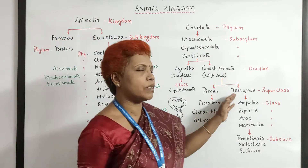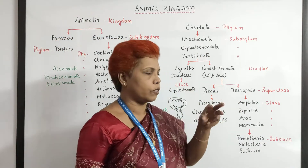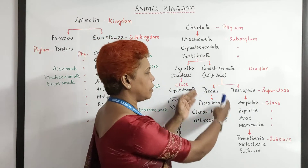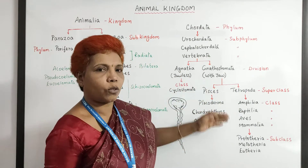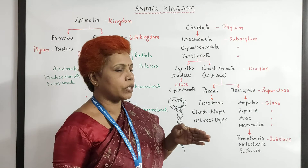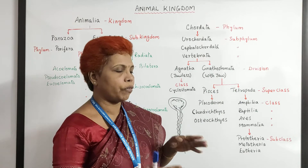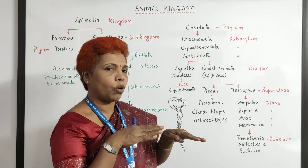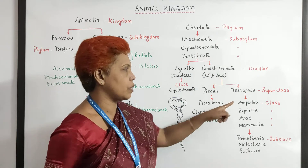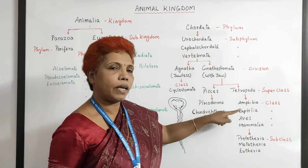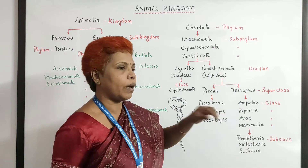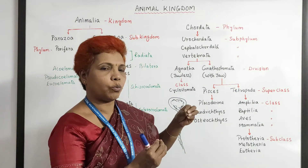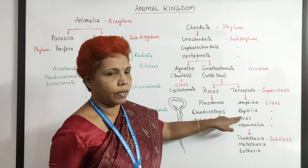When you come down to Tetrapods, four legs are present. Up to Pisces it is all aquatic; from Tetrapods it starts moving from water to land. Amphibians are wobbling between water and land. Then fully terrestrial animals — only one or two categories move towards water — so they are all reptilians.